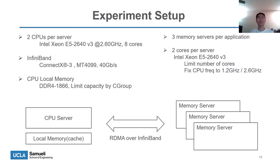This slide shows the experiment setup. We run SAMRU on a four-server cluster: one CPU server and three memory servers. The CPU server has two CPUs with 16 cores each. We use cgroups to limit the CPU server's memory usage. We use two cores on each memory server. The CPU server and memory servers are connected by InfiniBand with a bandwidth of 40 Gbps.